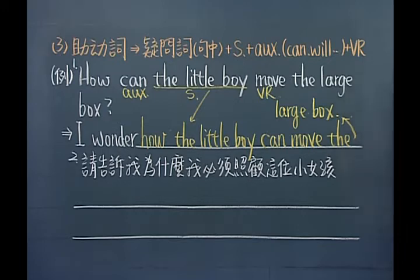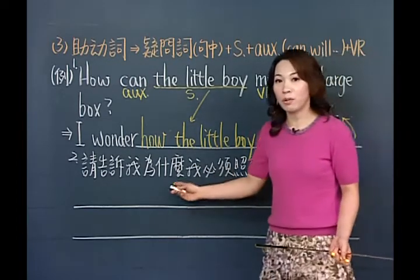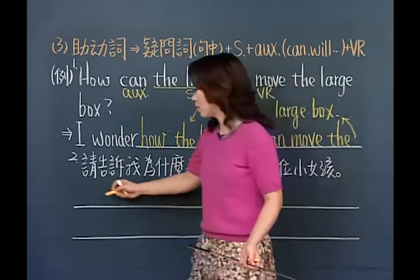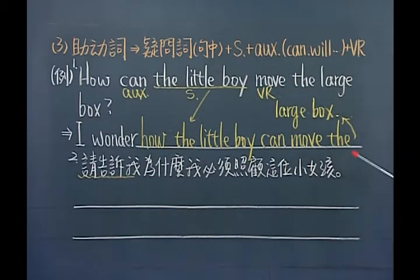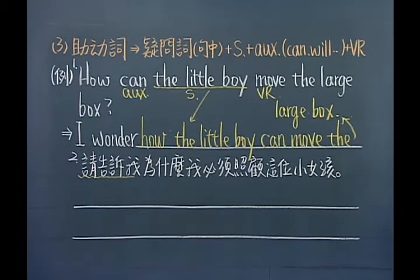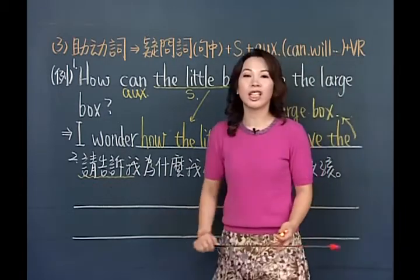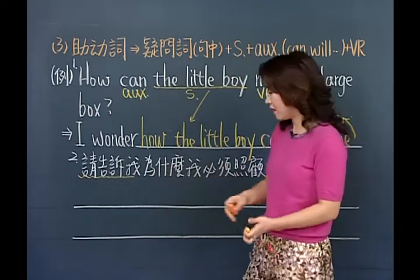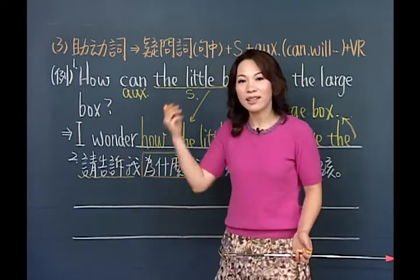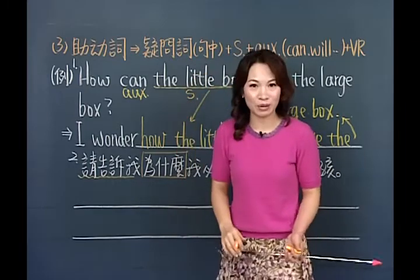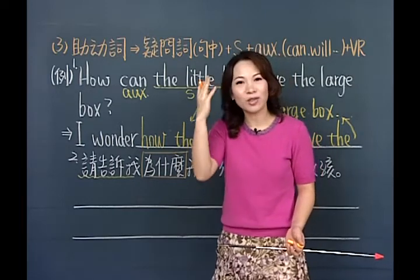接下来我们要做整句翻译的练习。来看看这个句子：「请告诉我为什么我必须要照顾这位小女孩。」这里的标点符号应该是句点才对，因为前面有一个主要子句叫「请告诉我」，所以这里的「为什么」这个疑问词就是摆在句中的。当你讲话的时候，前面有一个主要子句，你就知道这是间接问句。